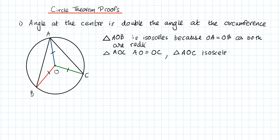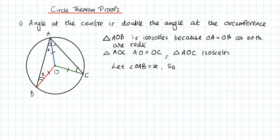Because triangle AOB is isosceles, the base angles are equal. So let's call angle OAB equal to x, which means angle OBA is also equal to x. The reason for this is that base angles in an isosceles triangle are equal.